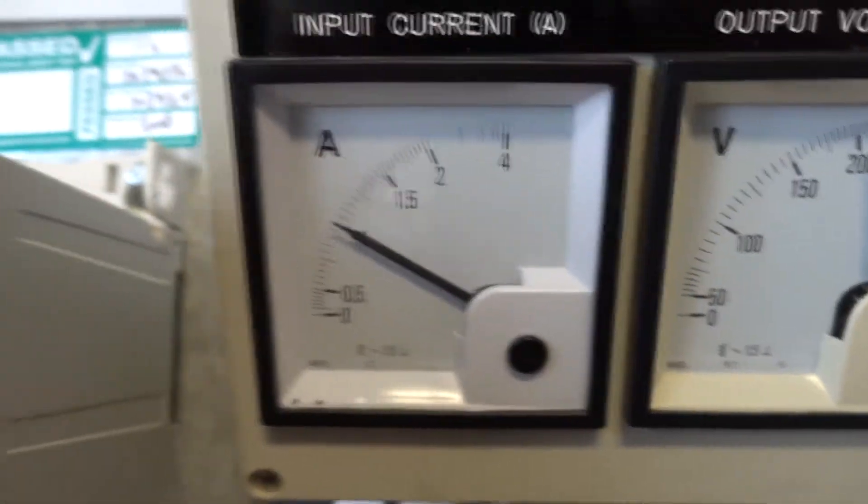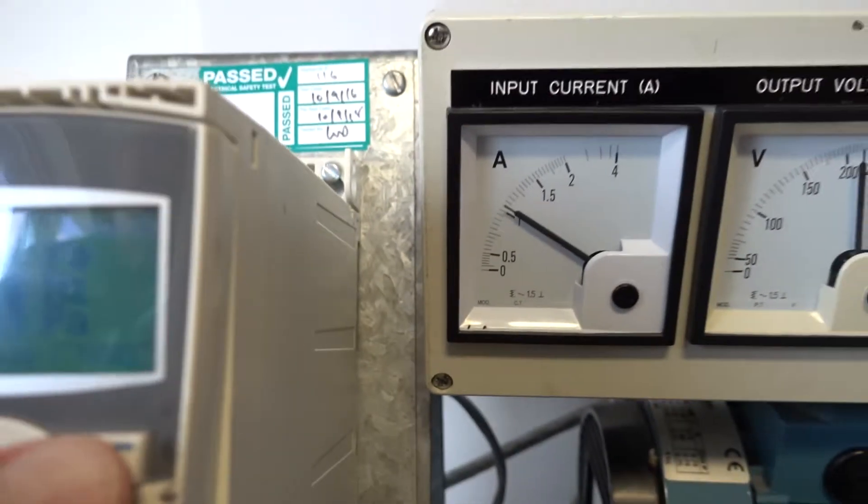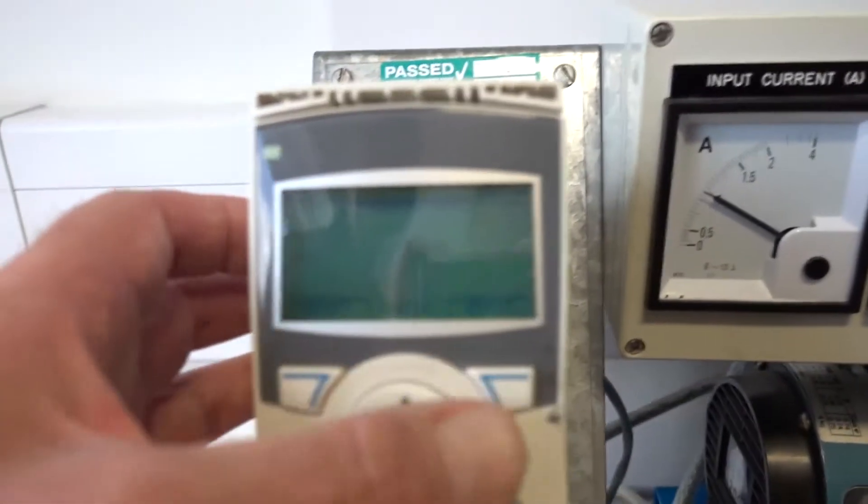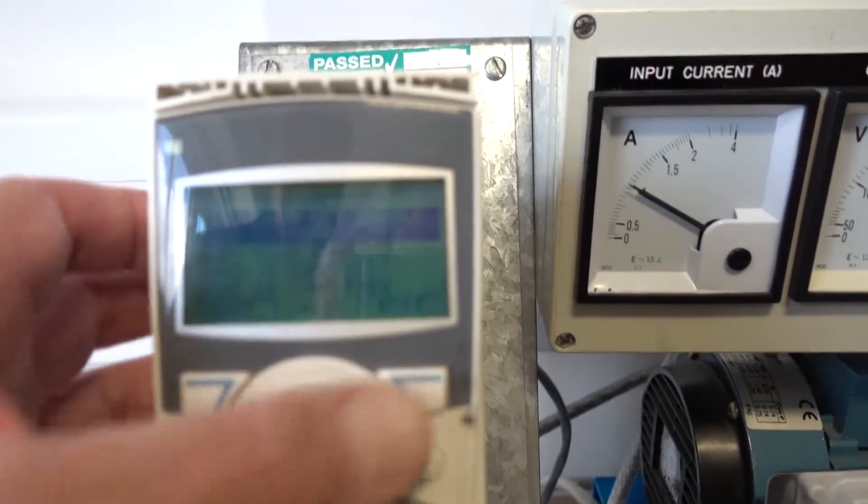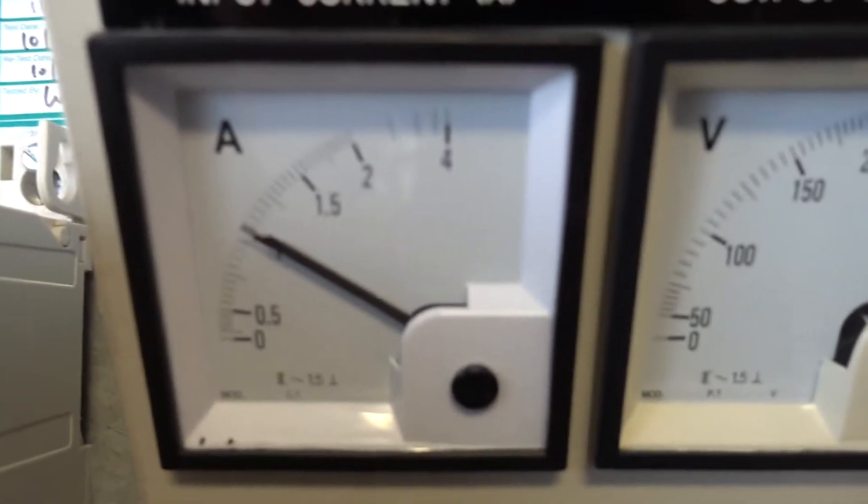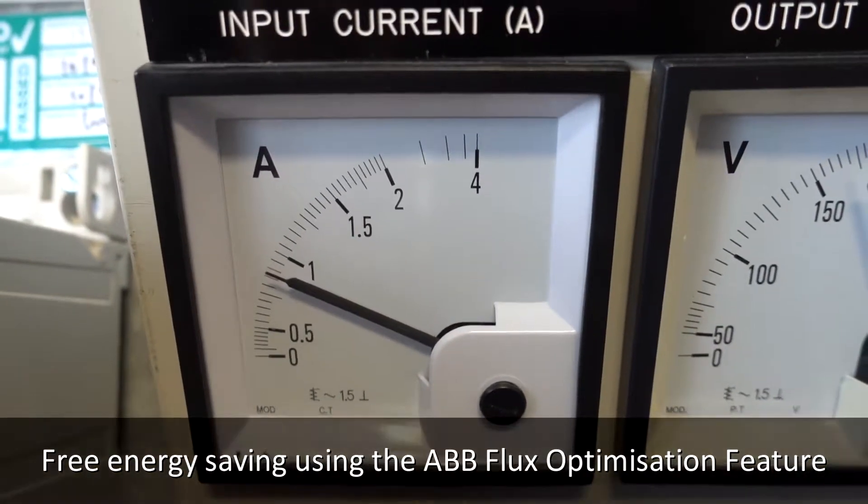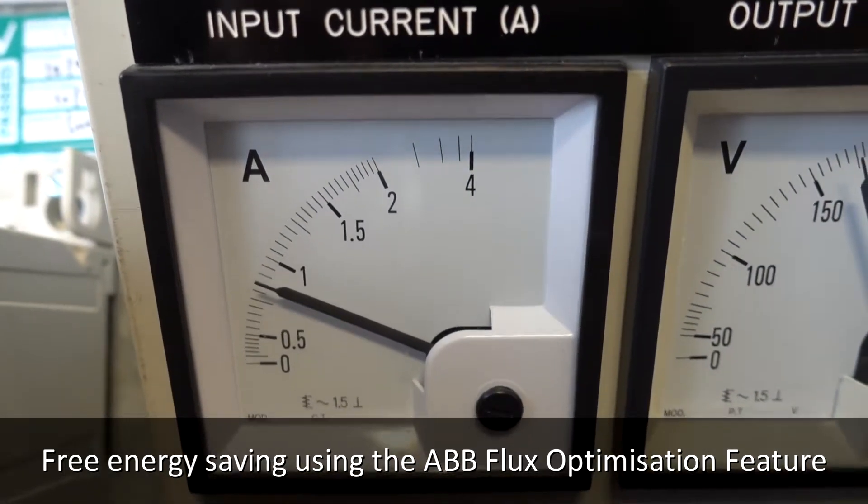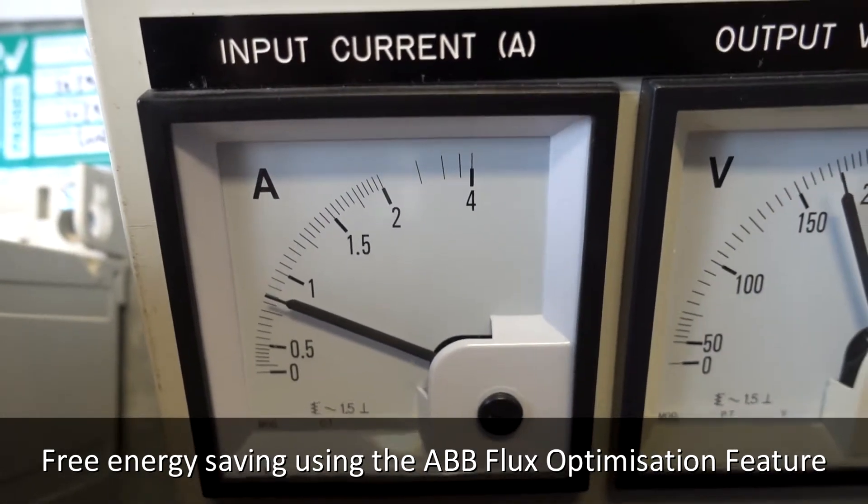As you can see we're taking approximately one amp. I'm switching on the feature now. Please look at the amps. You can see it dropped about 0.8 of an amp. This is free energy saving using flux optimization.